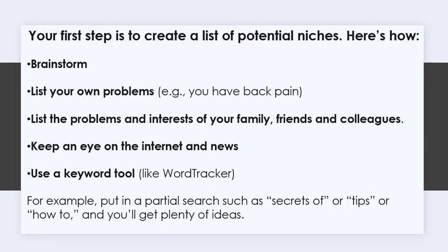Now list your interests and hobbies — for example, if you like to garden. Then list the problems and interests of your family, friends, and colleagues. Also keep an eye on the internet and news to uncover even more potential markets. In addition, use a keyword tool like WordTracker to uncover niches — for example, put in a partial search such as 'secrets of,' 'tips,' or 'how to.'